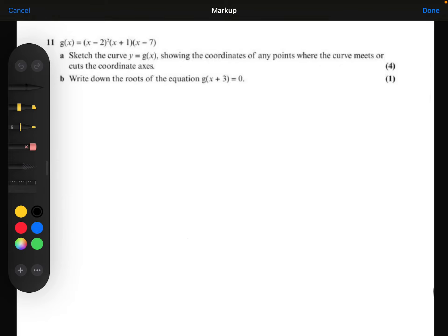g of x is equal to x minus 2 all squared times x plus 1 times x minus 7. Part A. Sketch the curve y equals g of x, showing the coordinates of any points where the curve meets or cuts the coordinate axes.